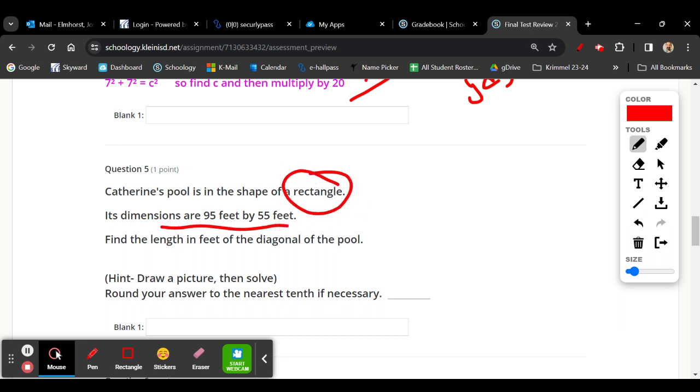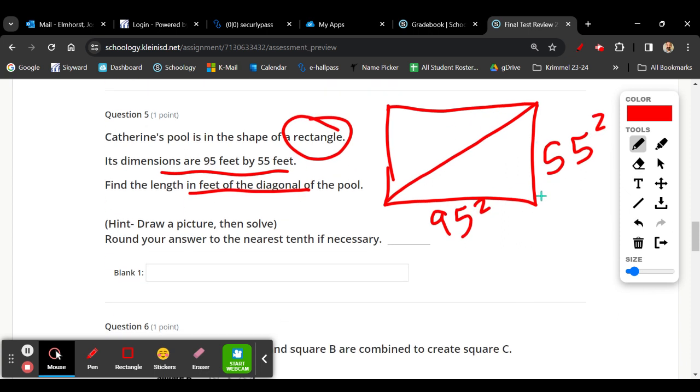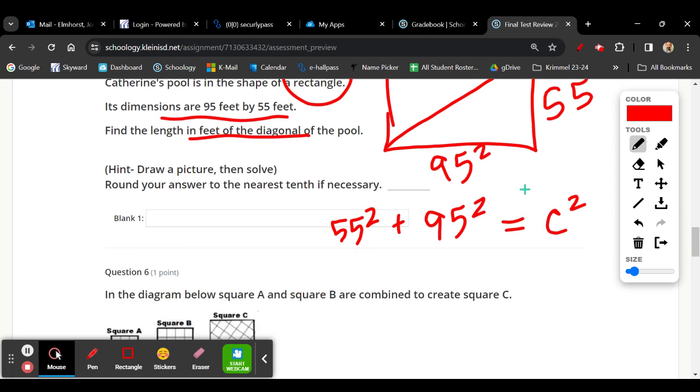We've got a rectangle with the dimension. Find the diagonal. We've got 55 and 95, and it's asking for the diagonal length. We're going to use the Pythagorean theorem to help us solve for the diagonal. We've got 55 squared plus 95 squared, which is equal to c squared. I'll give you a moment to multiply that out. 55 times 55, 95 times 95.